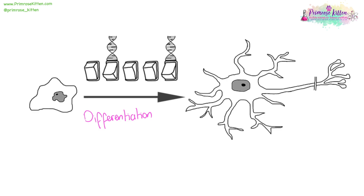All cells start off looking the same — they have your basic cell structure. Then various different genes will be turned on and turned off, and that's when it will start to specialize. That's when differentiation will take place and it will grow a really long axon, or it will grow the villi, or it will turn into a leaf cell.